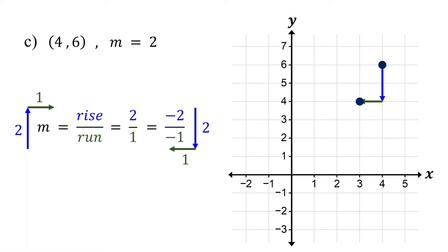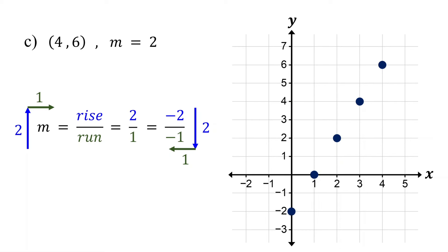Now, pause the video and add 2 more points. From the second point, move down 2 units, then to the left 1 unit and plot the third point. Repeat these steps from the third point to plot a fourth point. You can add more points like this if you want. Finally, draw a line that passes through the points.